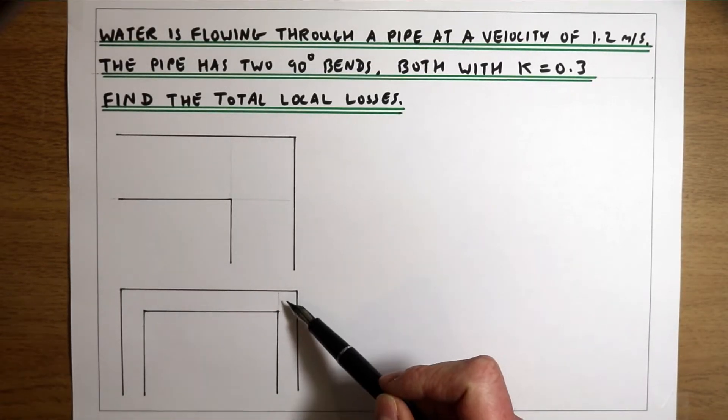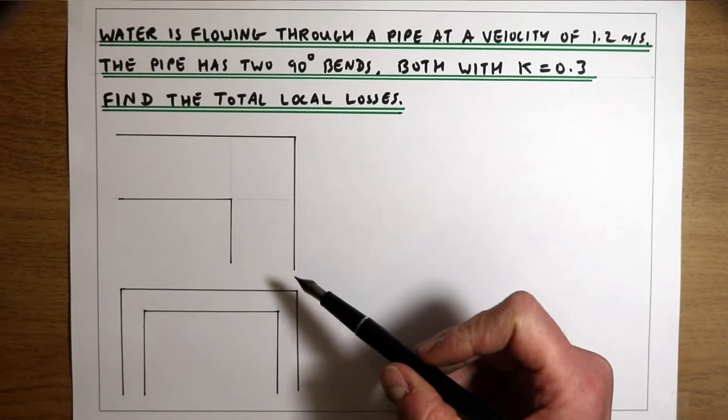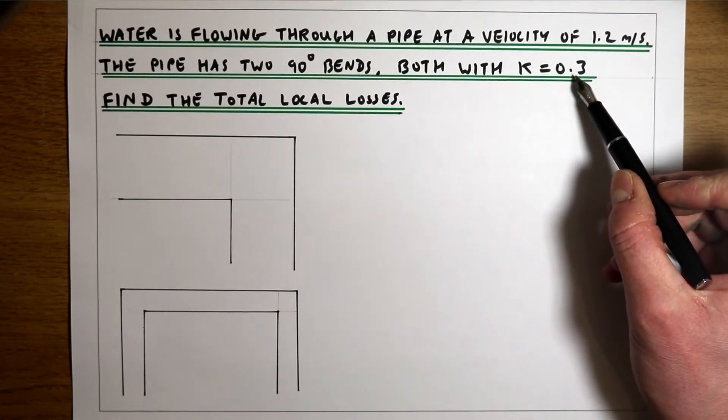The pipe has two 90 degree bends in it, and we're told that those bends have a loss coefficient k of 0.3.